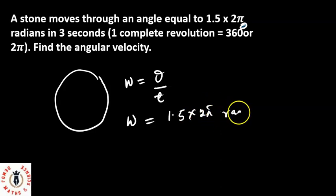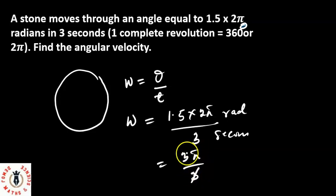This equals 1.5 times 2, that's 3π radians over 3 seconds. 3 here is 1, 3 here is 1, that's π radians. So the angular velocity is π radians per second.